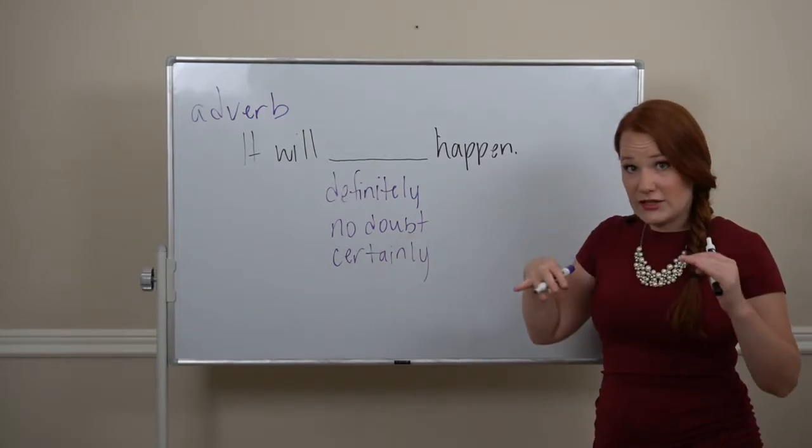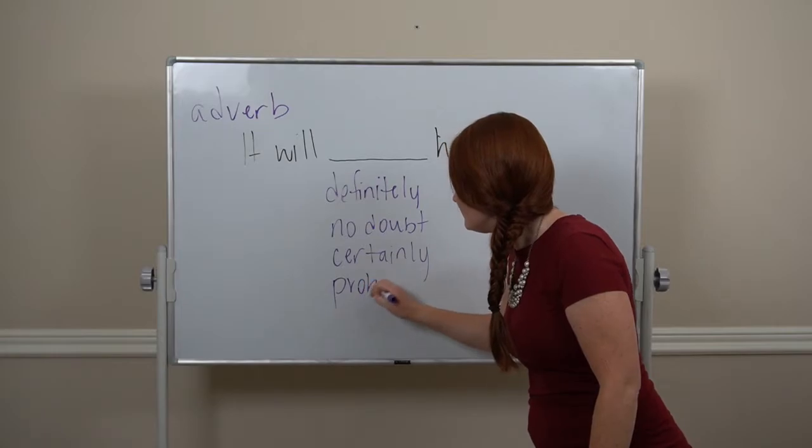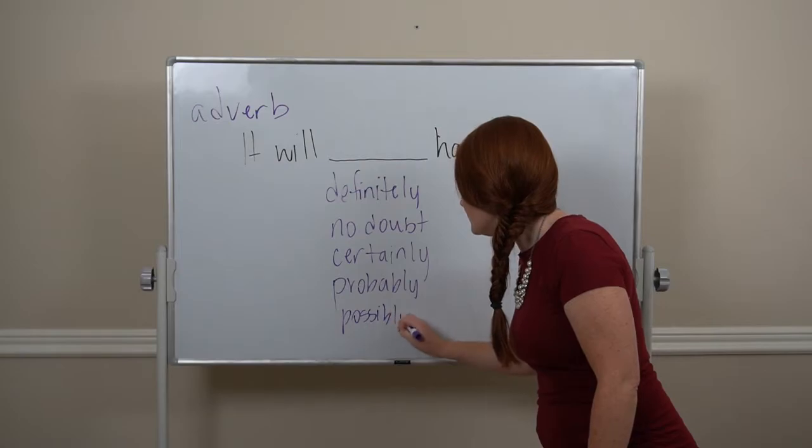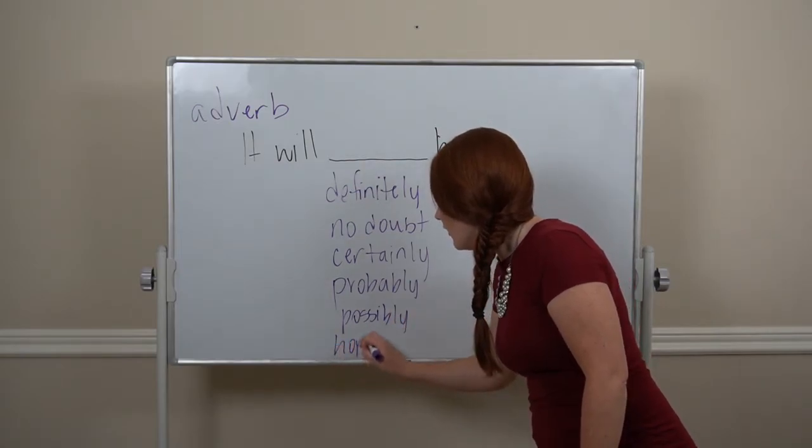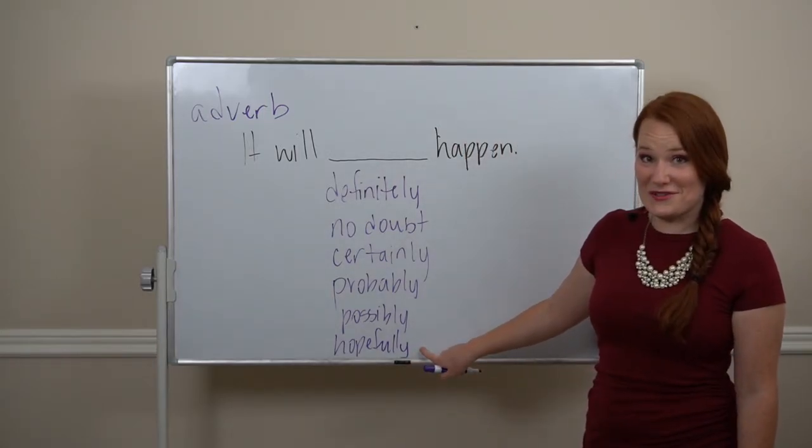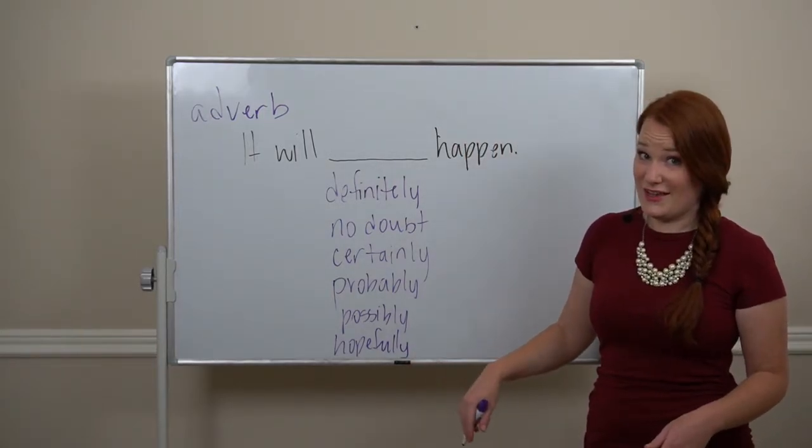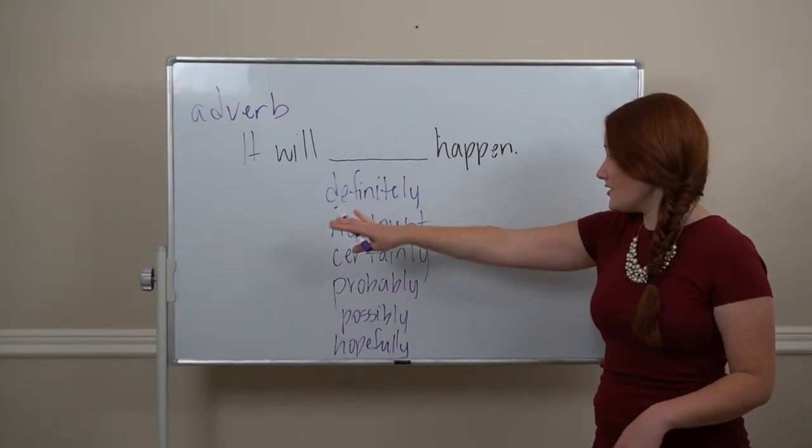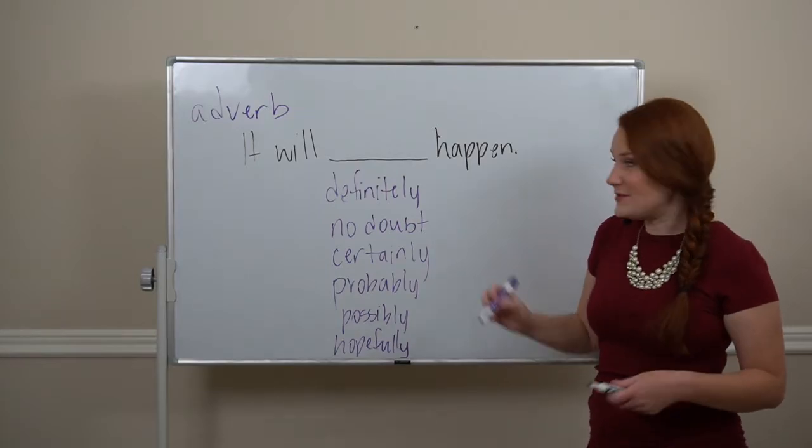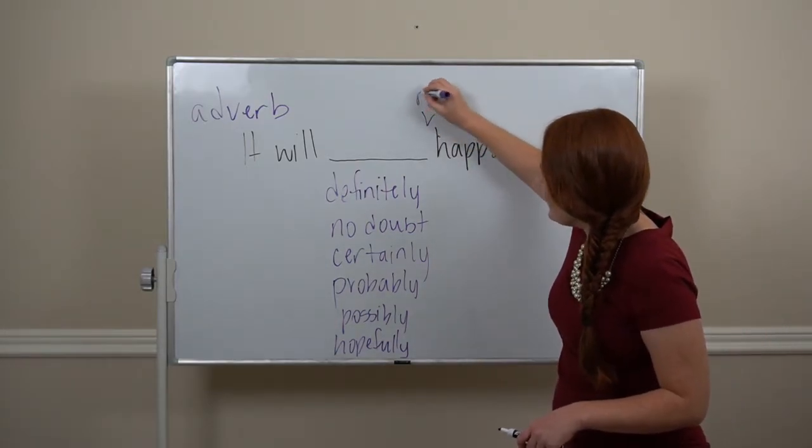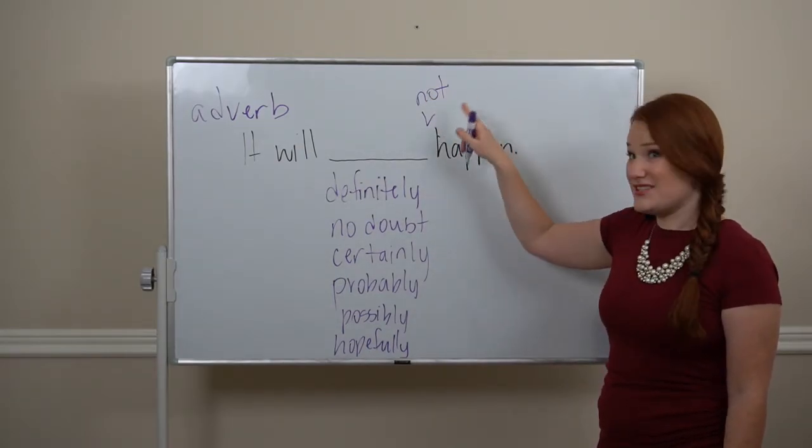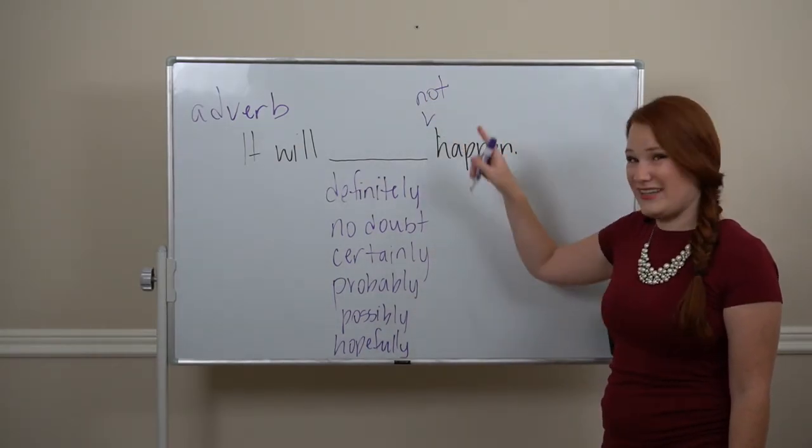A little bit lower, we can say probably, possibly, or hopefully. With hopefully, we don't know if it will happen, but we want it to happen. So all these between the auxiliary verb and the main verb. We can also add not to make these negative, right there. So it'll definitely not happen. It'll no doubt not happen. It'll probably not happen.